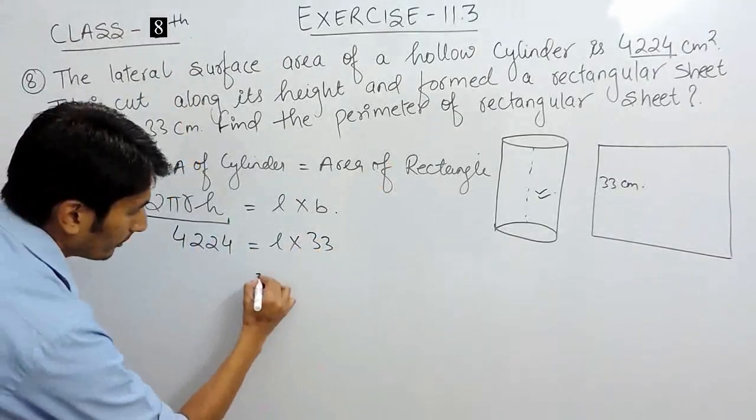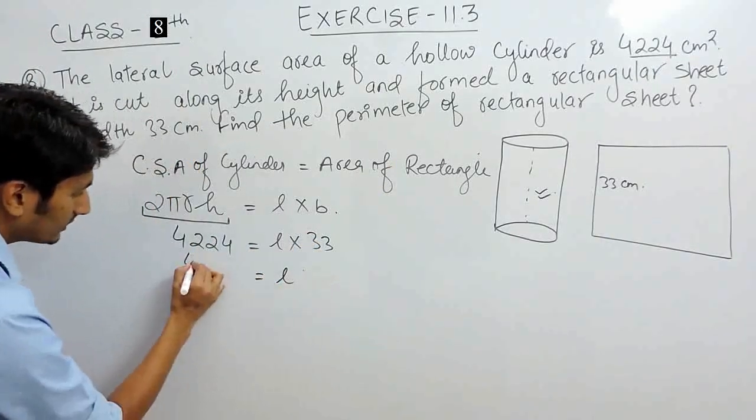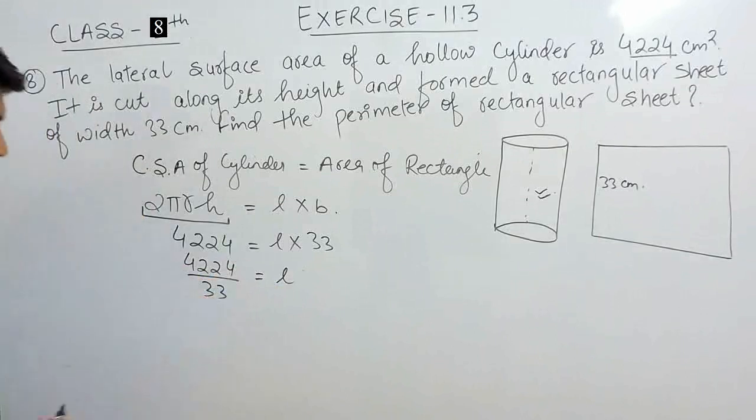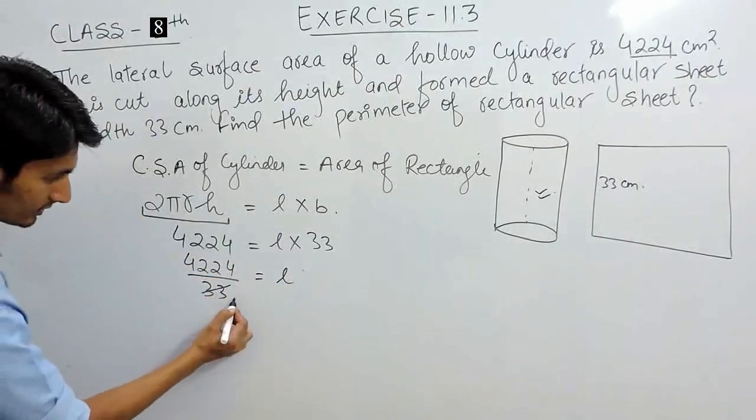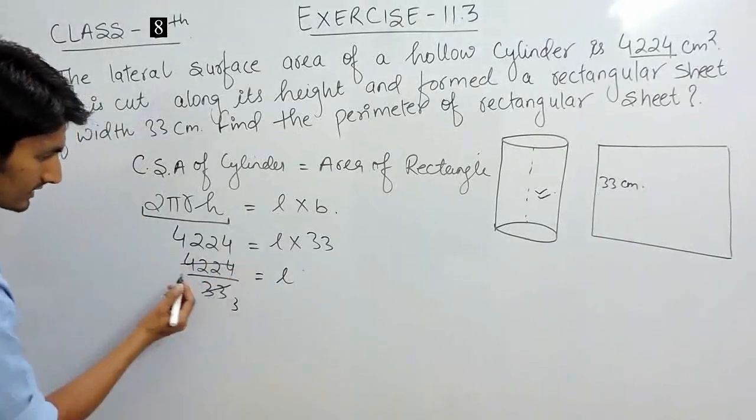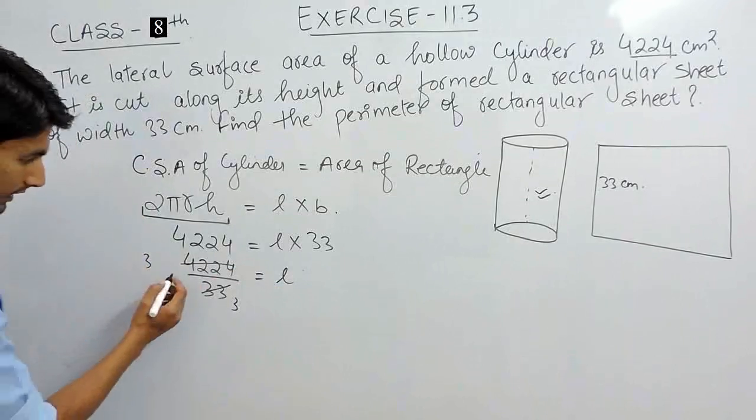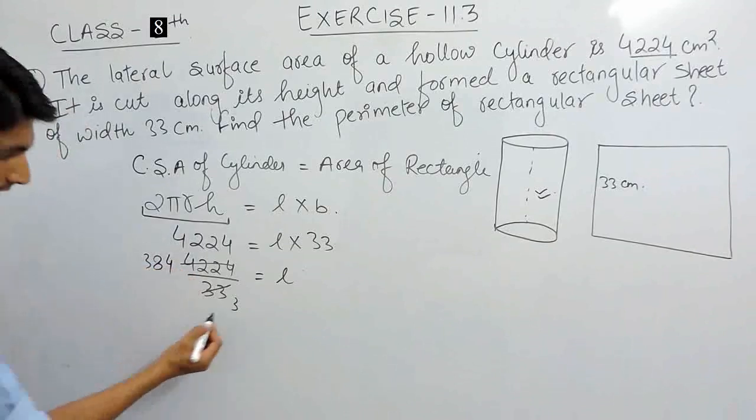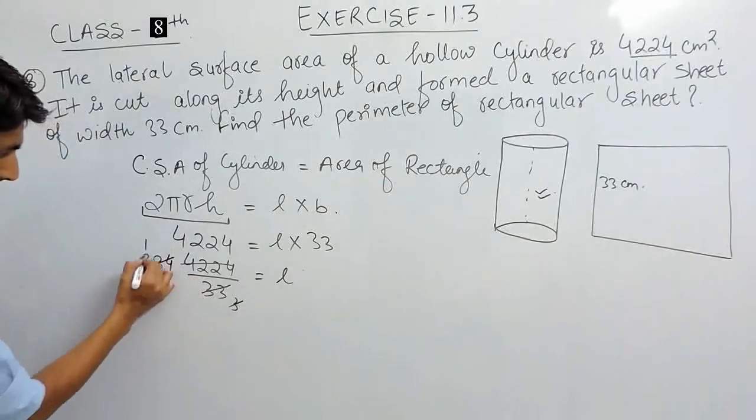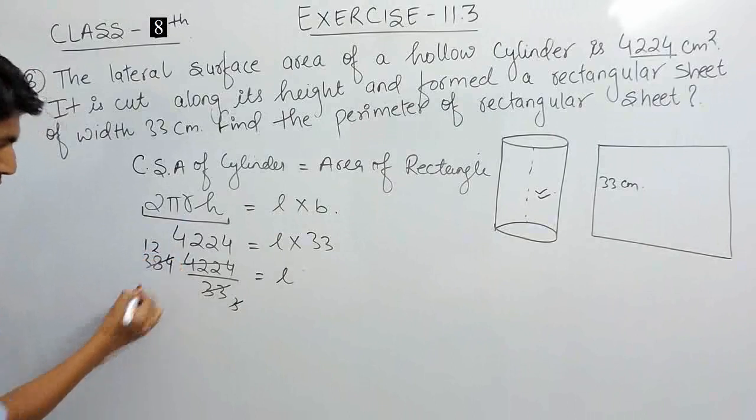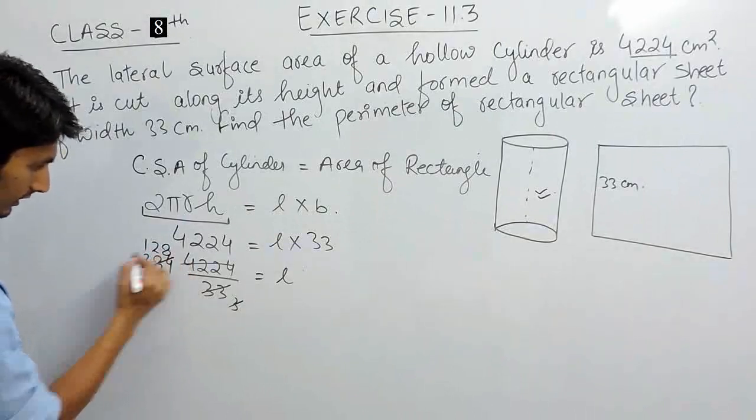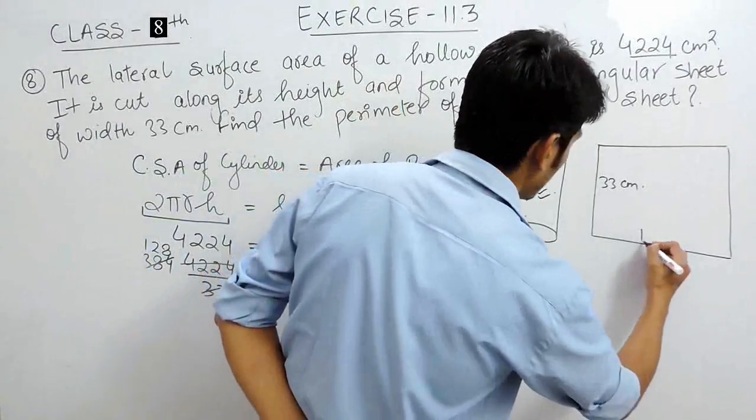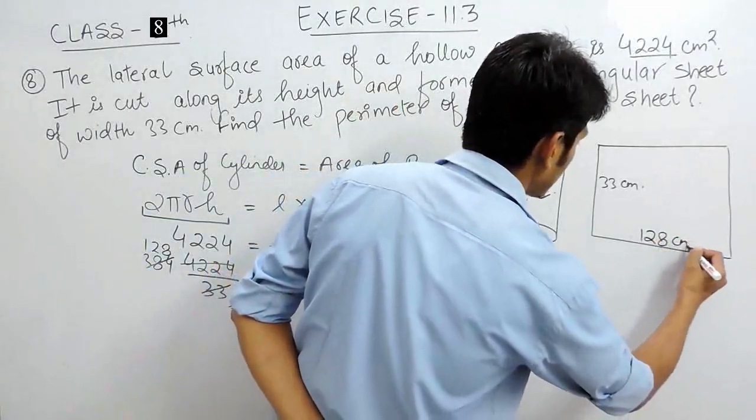From here, we can find the length of the rectangle. Width is given as 33 cm, this can be 11 times 3. This is 11 times 3, this is 8 times and this is 4 times. Now, this can be 10 times 3. So length of this rectangular sheet must be equal to 128 cm.